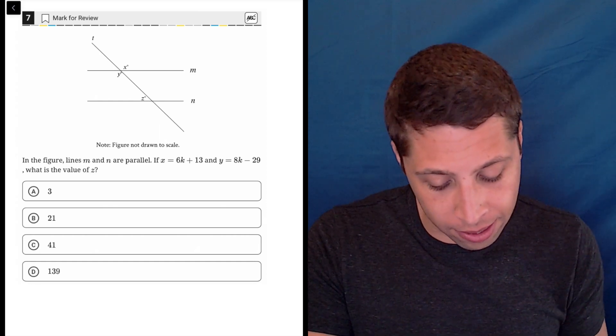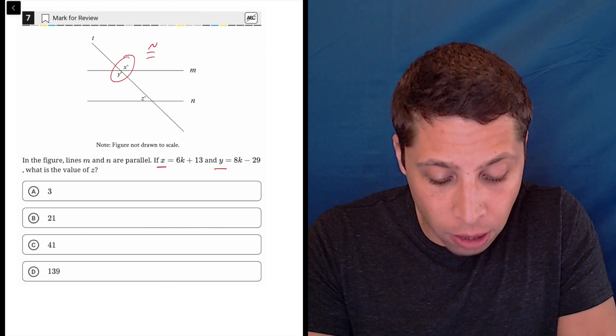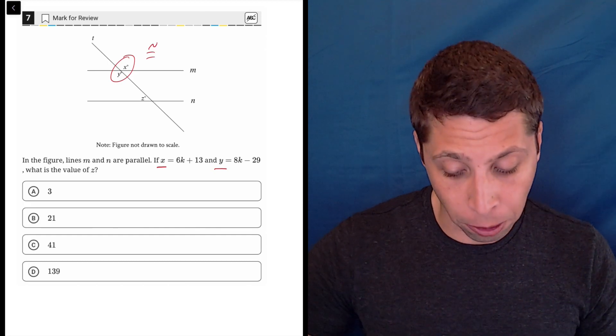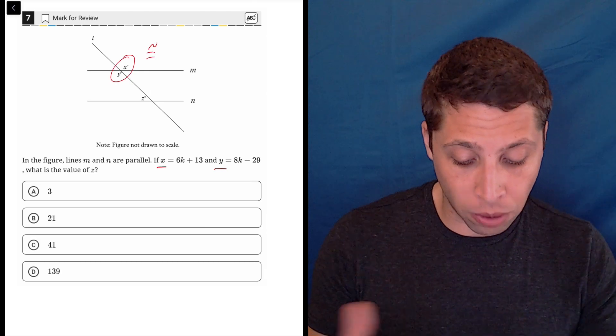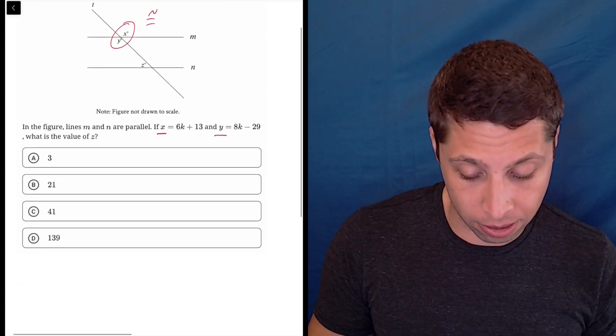So what you need to recognize is the two pieces that they give us, the X and the Y, those are congruent, right? They're vertical angles, so they're going to be equal to each other. So in order to know what Z is, we're first going to need to know what these angles are, and we have to solve using some algebra here.